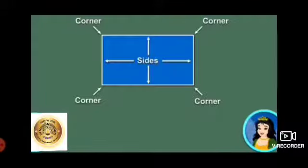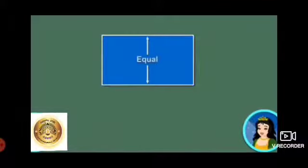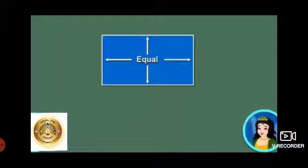Now look at this shape. This shape is also made up of straight lines, so it also has four sides and four corners. But it is not a square because all its sides are not equal. However, its opposite sides are equal. It is a rectangle.